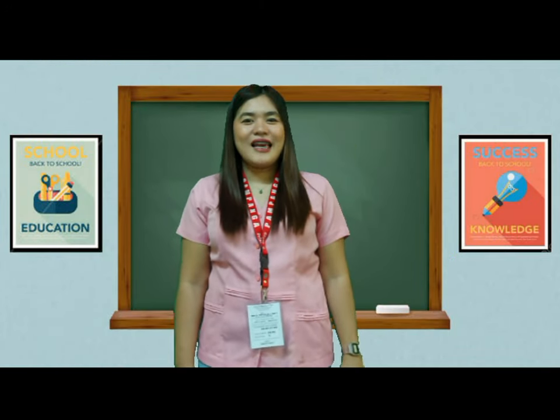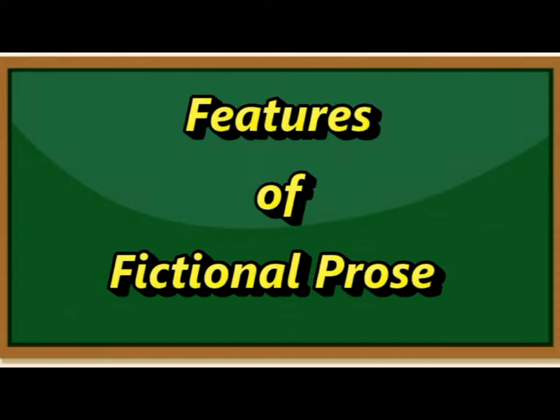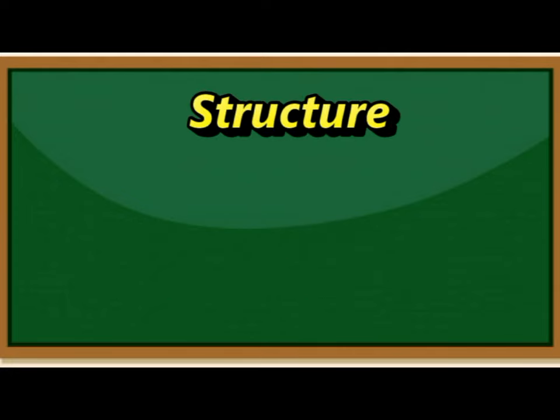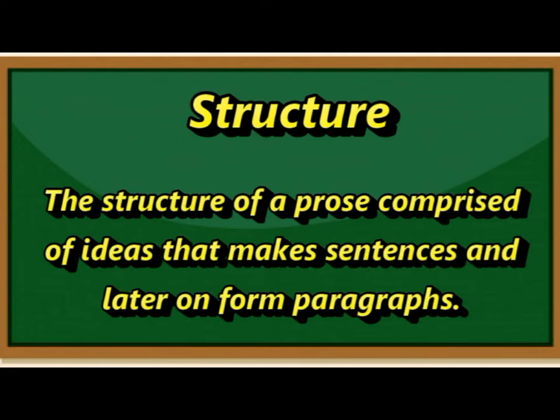Great! Now that you know the different types of prose, let us proceed with the features of fictional and non-fictional prose. The features of fictional prose. Number one, structure. The structure of a prose is comprised of ideas that make sentences and later form paragraphs. Dialogues can also be used depending on the genre, like in short stories and novels.